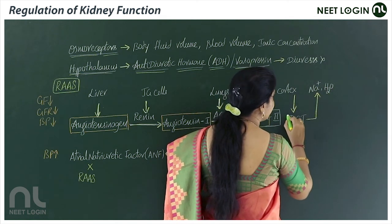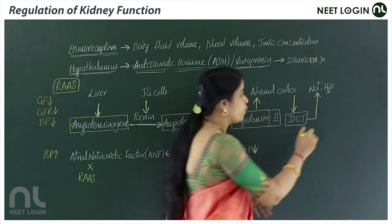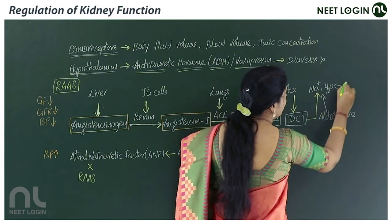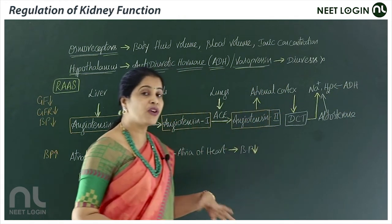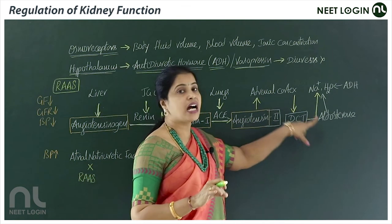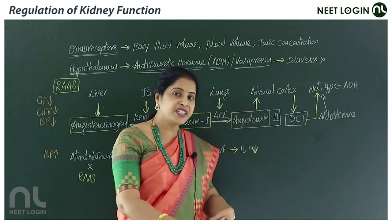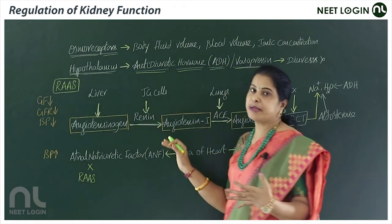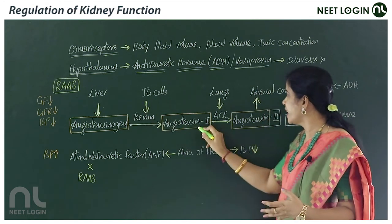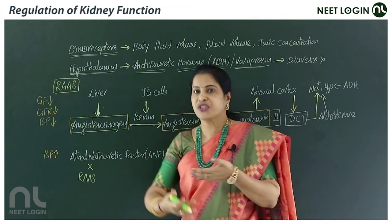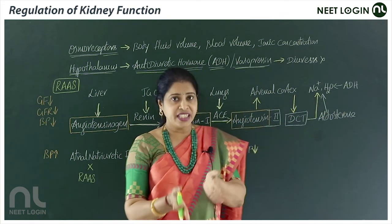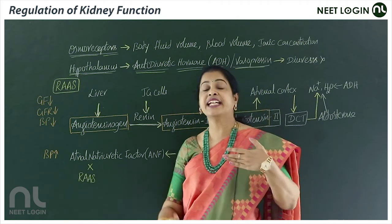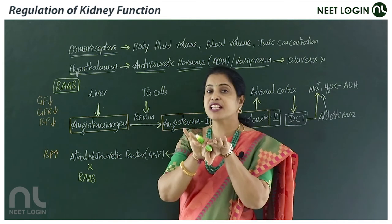Angiotensin II acts on the adrenal cortex, stimulating secretion of aldosterone. Aldosterone acts on the DCT to promote reabsorption of sodium; water reabsorption follows via ADH. Aldosterone is called a salt-retaining hormone — it is a mineralocorticoid of the adrenal cortex, helping reabsorb minerals like sodium and chloride. The entire RAS mechanism increases blood pressure through vasoconstriction, which restores glomerular flow and GFR.